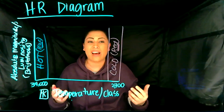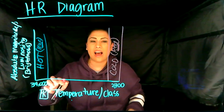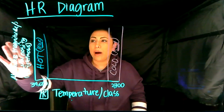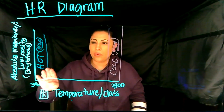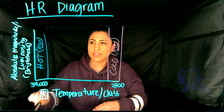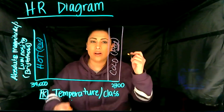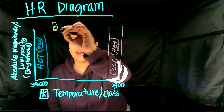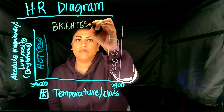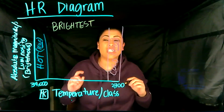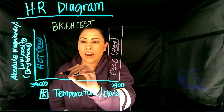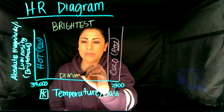Cold in star terms is still really, really hot. So the coolest stars are red and the hottest are blue. Now, when we think about brightness — we have our top and bottom on the y-axis — the top is going to be our brightest stars, the shiniest stars, and down here they're going to be the dimmest.